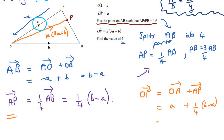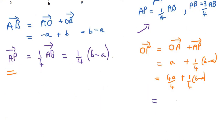We can simplify by writing 'a' as 4a/4, then bringing it inside the bracket to get ¼(3a + b). This tells us that our value of k is a quarter. Great, let's move on to the next question.